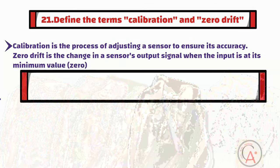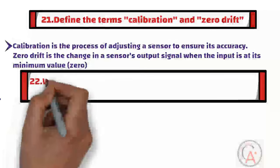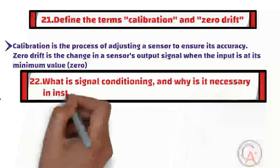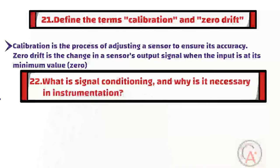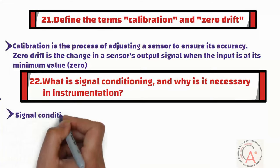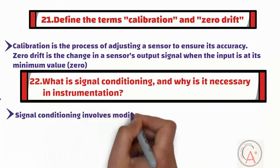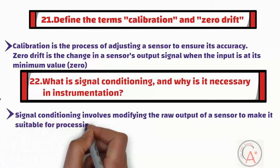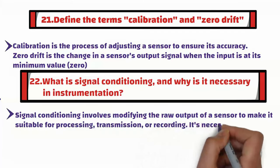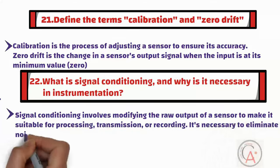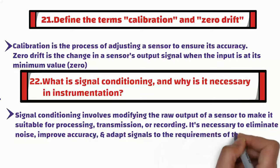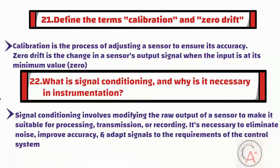The twenty-second question is: what is signal conditioning and why is it necessary in instrumentation? Signal conditioning involves modifying the raw output of a sensor to make it suitable for processing, transmission, or recording. It is necessary to eliminate noise, improve accuracy, and adapt signals to the requirements of the control system.